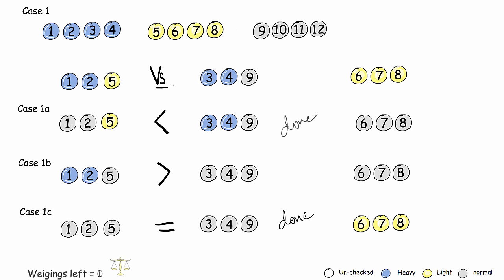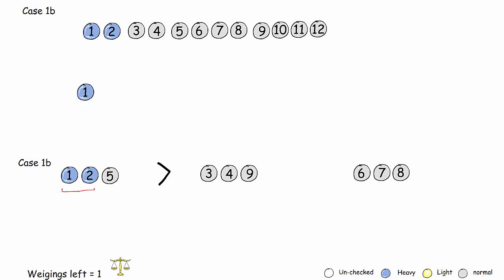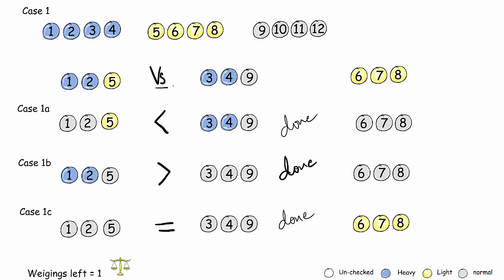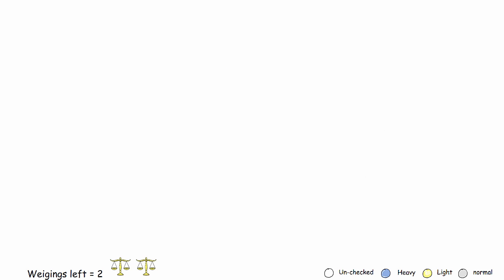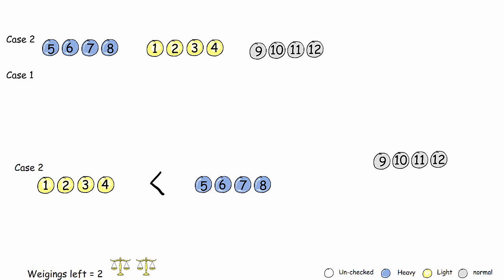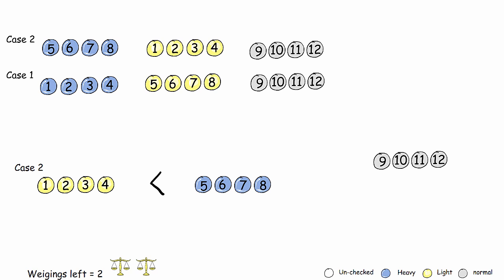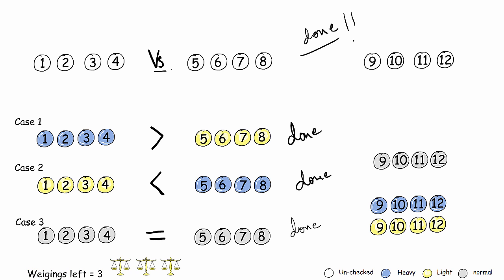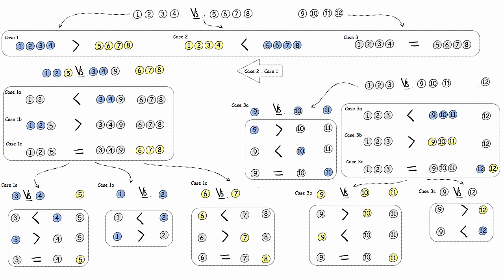The last sub-case is even simpler: balls 1 and 2 claim to be heavy, so we weigh them against each other and the scale shifts towards the heavier one. With this we have figured out how to find the faulty ball and the fault for Case 1. If we get Case 2, comparing it with Case 1 we find the scenarios are exactly the same — one of four balls heavy, one of four balls light, remaining four normal — so we proceed identically. This is a complete list of all possible scenarios for 12 identical-looking balls, and in all cases we find the faulty ball in no more than three weighings. Thanks for watching.